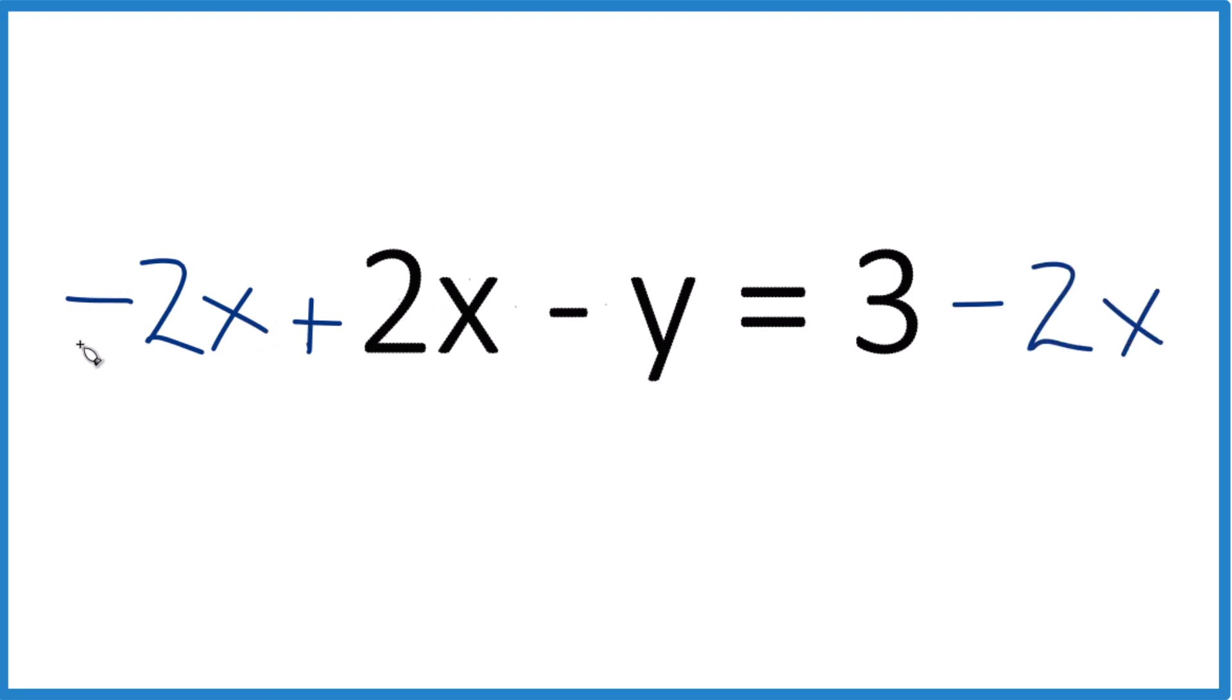Negative 2x plus 2x, that's 0. So right now we have negative y equals 3 minus 2x. How do I get this negative y by itself?